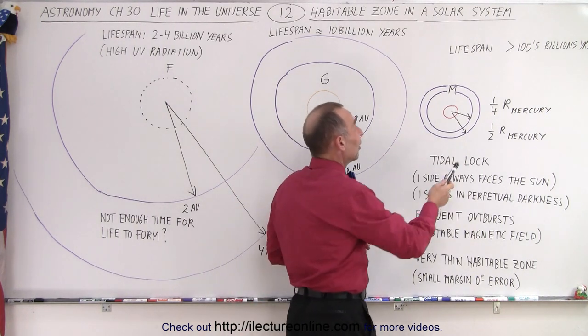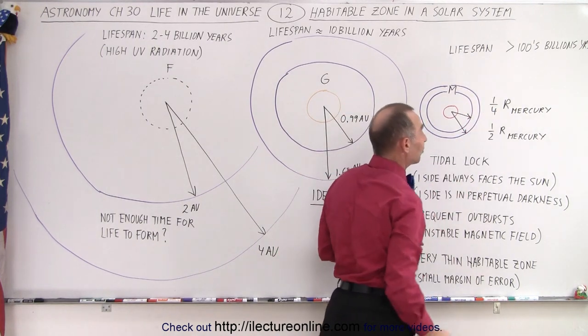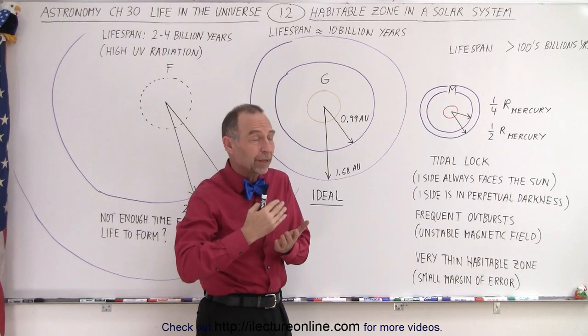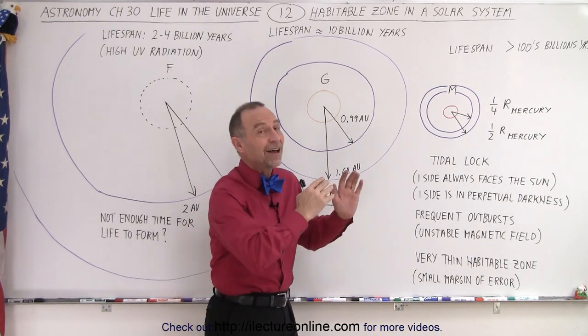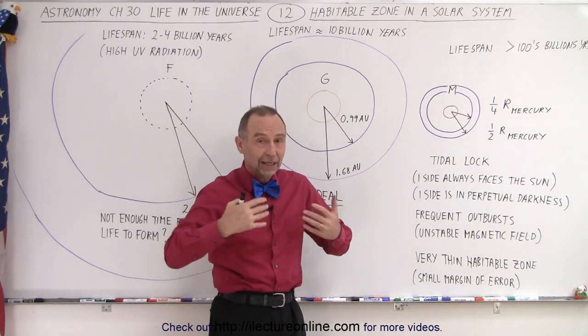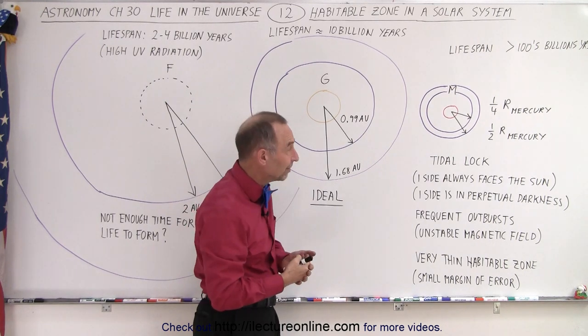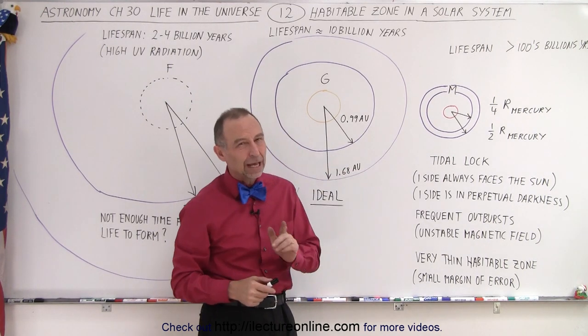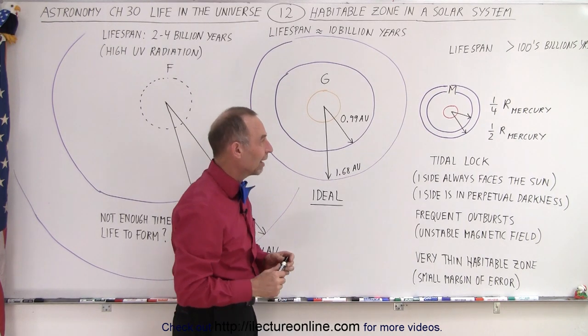It does have one advantage. These stars have an extremely long lifespan. They last for hundreds of billions, even trillions of years before they become red giants. Lots of time for life to be able to evolve and evolve into an intelligent species. But because of all the other conditions, it's simply not an ideal place for life to exist.